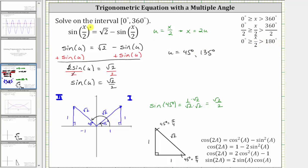We're trying to solve the equation for x, not u. Since x is equal to 2u, the solutions in terms of x are x equals two times 45 degrees, as well as two times 135 degrees. Therefore, our final solutions are x equals 90 degrees and x equals 270 degrees.